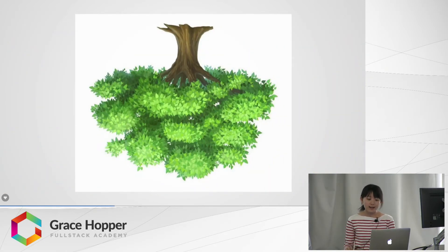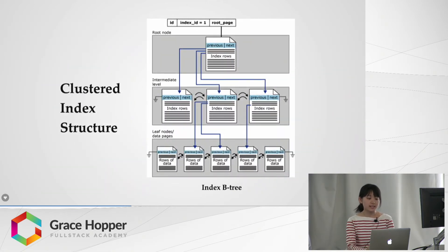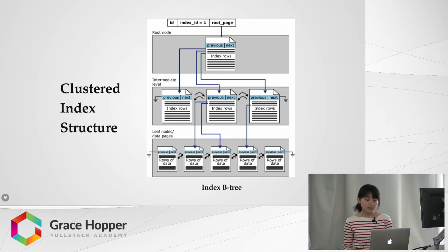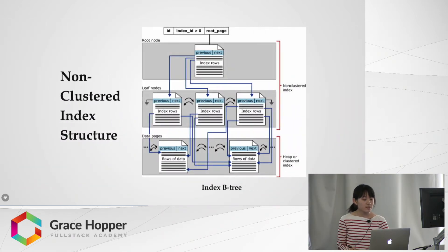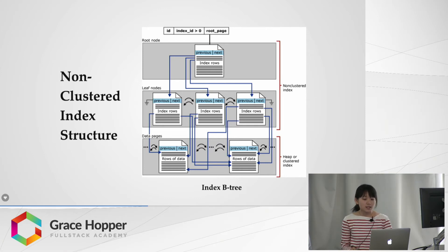We've already seen that SQL Server database indexes use a B-tree. How does it look specifically? This image shows the clustered index structure. The topmost node of the tree is called the root node, the bottom level is called the leaf node, and the level between the root and leaf nodes is called an intermediate level. The leaf nodes contain the data pages of the table in the case of a clustered index. For a non-clustered index, the structure looks quite similar, but the leaf nodes contain the data pages of the heap or clustered index.